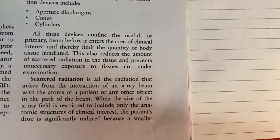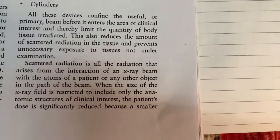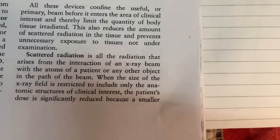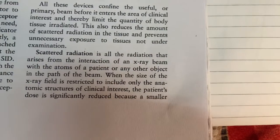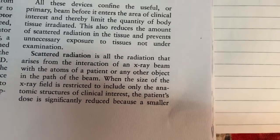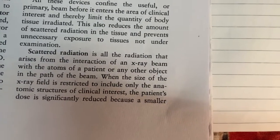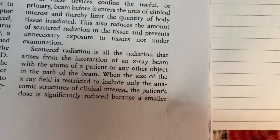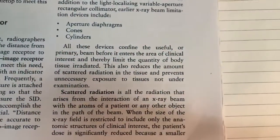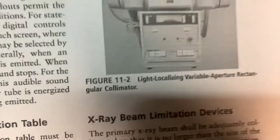These devices also reduce the amount of scattered radiation in the tissue and prevent unnecessary exposure to tissues not under examination. Scattered radiation is all radiation that arises from the interaction of an X-ray beam with the atoms of a patient or any other object in the path of the beam. When the X-ray field is restricted to only the anatomic structures of clinical interest, patient dose is significantly reduced.